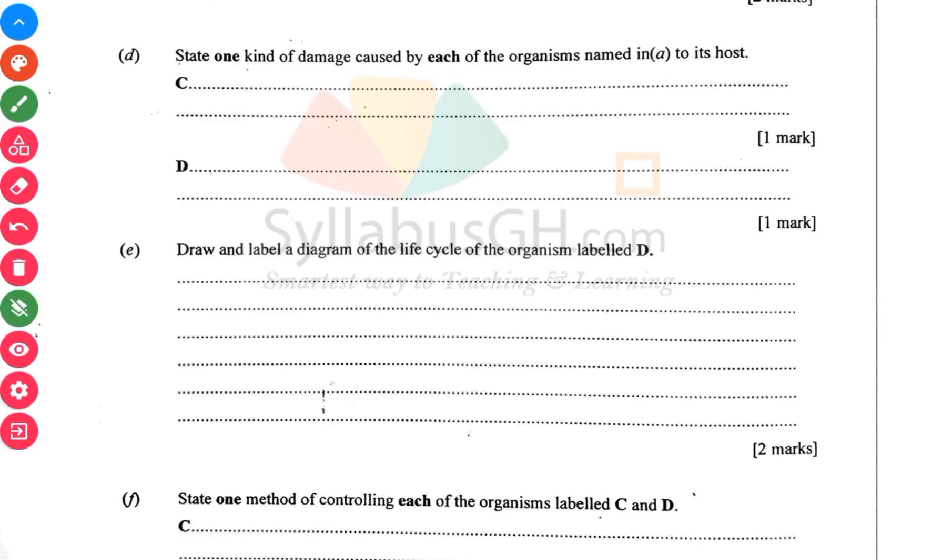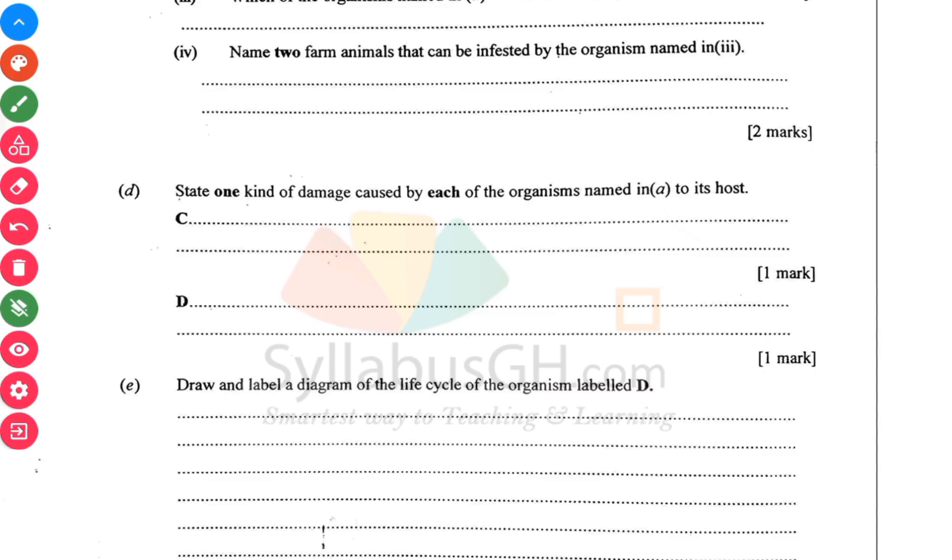Draw a life cycle of the organism in D. The weevil undergoes complete metamorphosis. What you can do is draw: move to the egg, move to the larva, then move to the pupa. The larva is like the worm organism, and then the pupa is more of like a waiting stage for the organism to move to become the adult weevil.